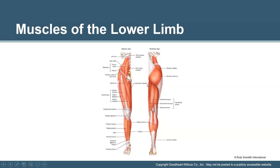The hamstrings are on the back of the thigh. Within this group we have the semitendinosus, semimembranosus, and biceps femoris. The biceps femoris is the most lateral hamstring muscle; it originates on the ischial tuberosity — the buttock bone — with its short head originating on the linea aspera. Its insertion is on the lateral condyle of the tibia and the head of the fibula. All hamstring muscles serve to flex the leg at the knee and laterally rotate.